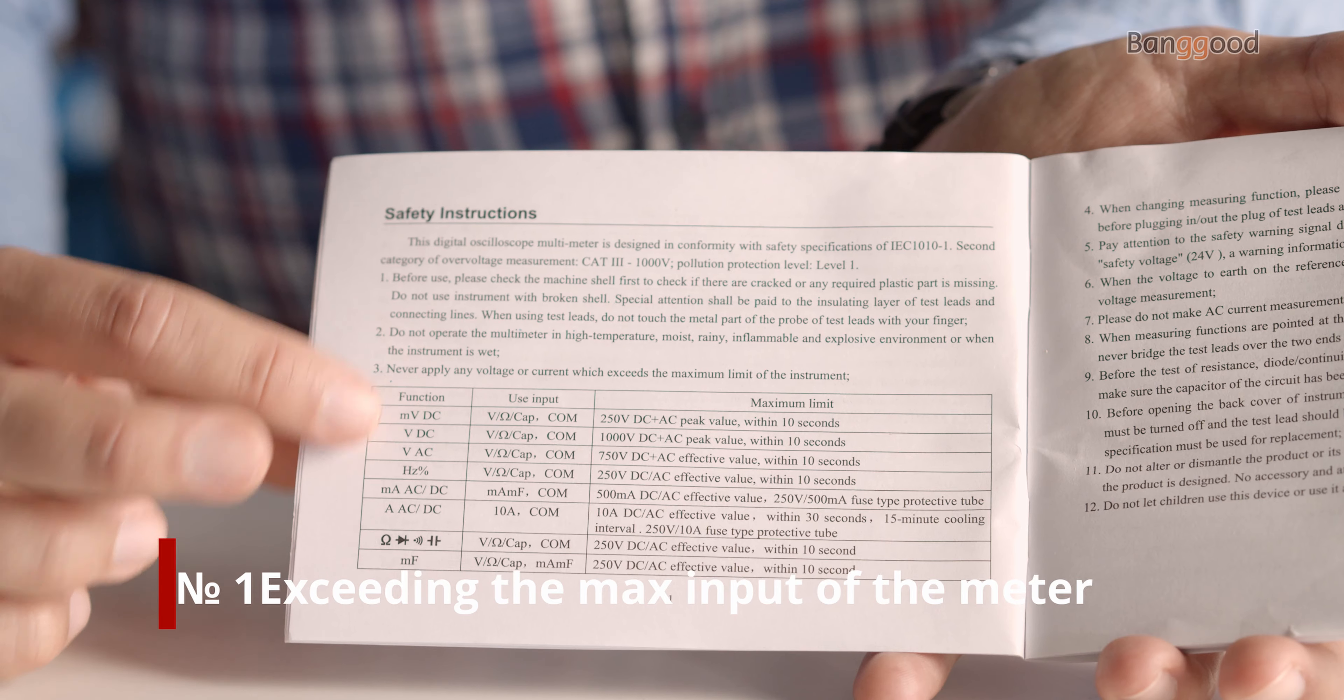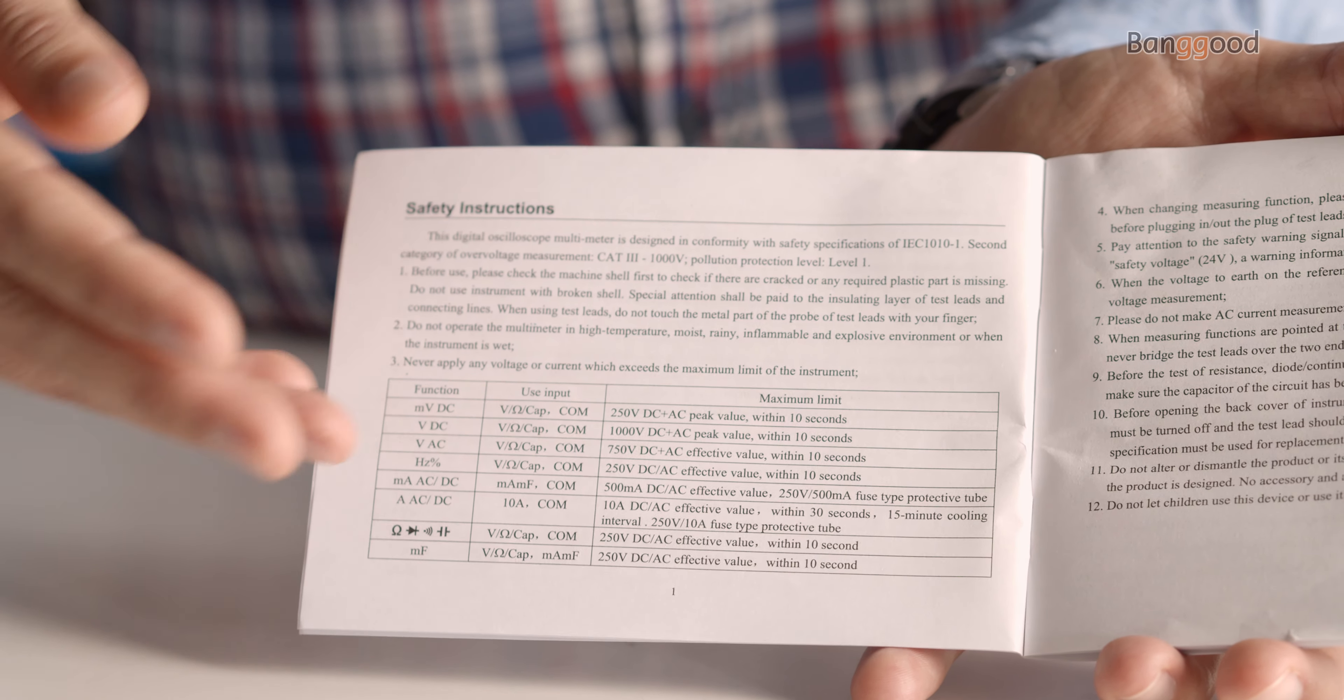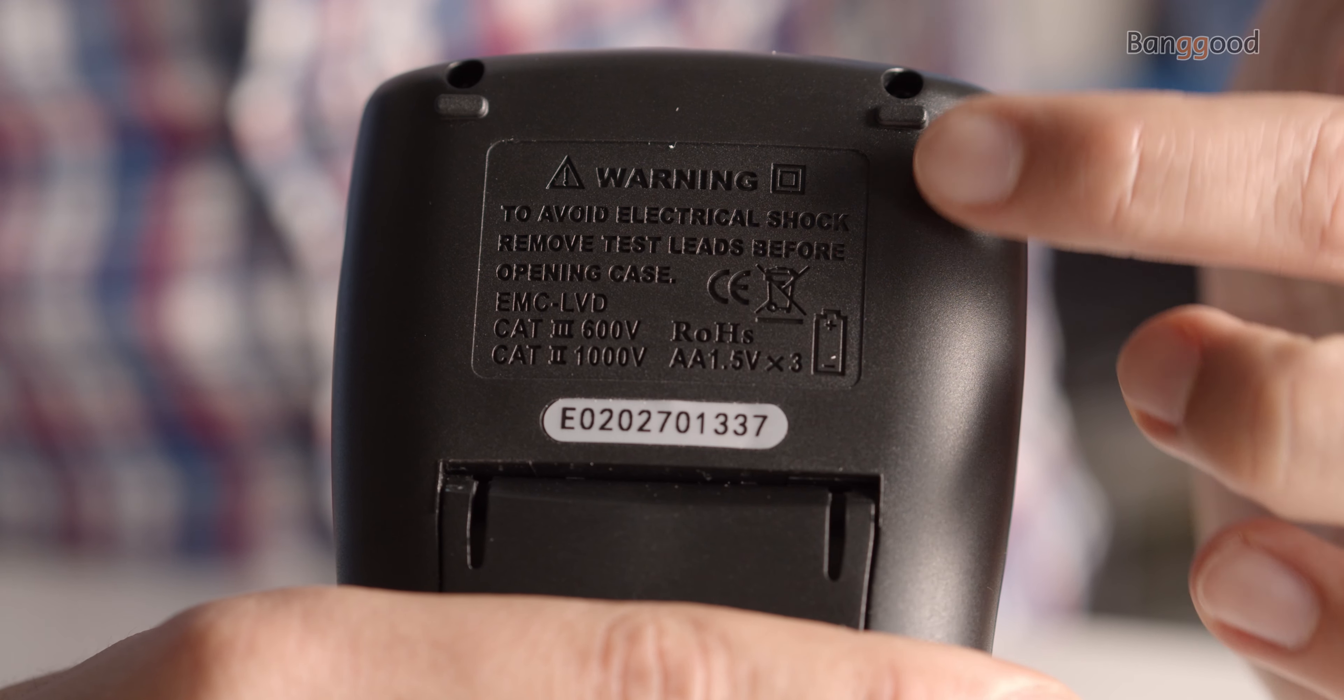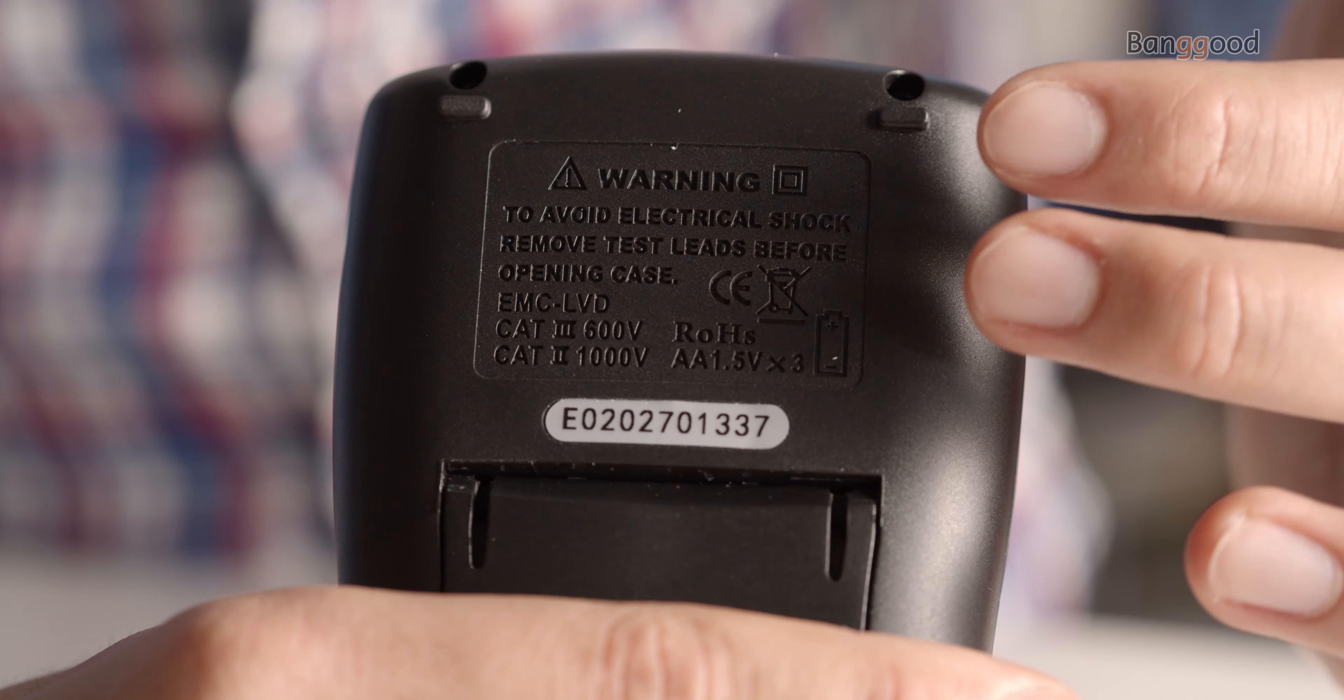Number one: use the wrong test tool for the job. It's important to match your digital multimeter to the work ahead. Make sure your test tool holds the correct CAT rating for each job you do, even if it means switching multimeters throughout the day.